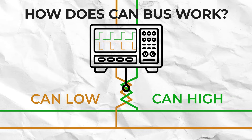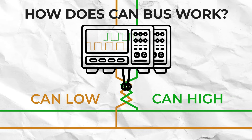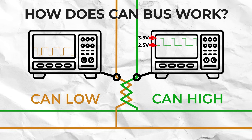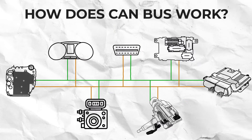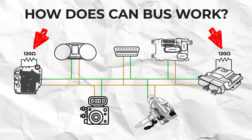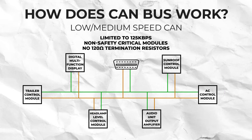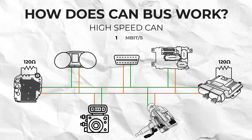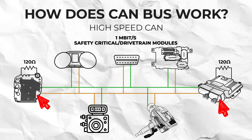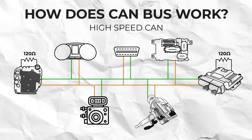The network uses differential voltage signalling to pass data between modules, with the voltage switching from 2.5 to 3.5 volts in CAN high and 2.5 to 1.5 volts in CAN low. These networks usually have two 120 ohm terminating resistors located inside a module at each end of the circuit, which helps stabilise voltage levels and maintain signal integrity. Typically safety critical or drivetrain modules are part of the high speed CAN bus network, such as the instrument cluster, engine ECU and transmission control module, and this is the network we will be diagnosing today.